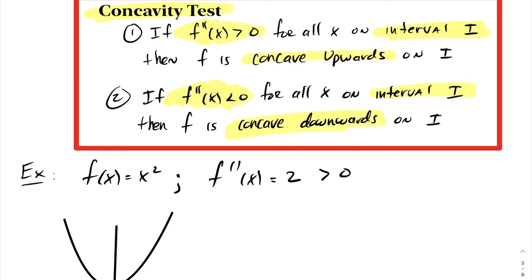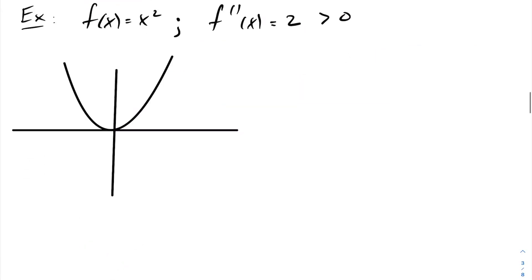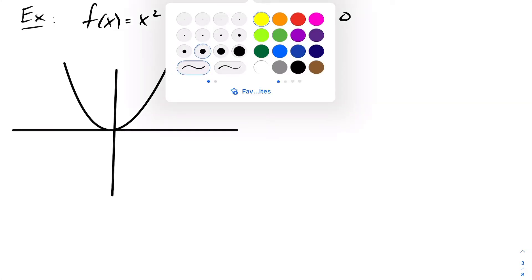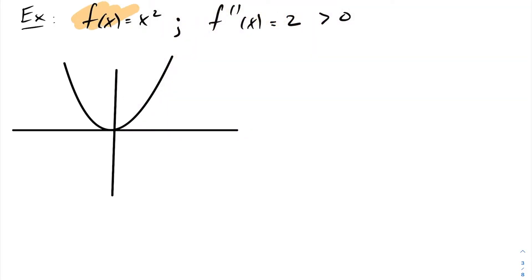Let's look at some examples. For our first example, we have a function f at x equals x squared. We already know it's concave upwards, but to show you: if you take your second derivative, you'll find f double prime at x is two, and that's always greater than zero. And because of that, the function is concave upwards.